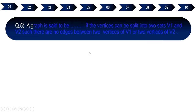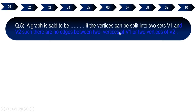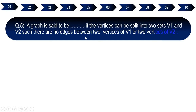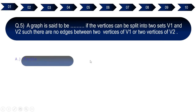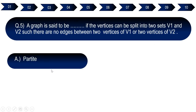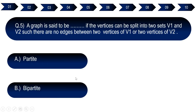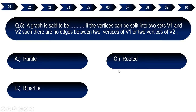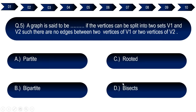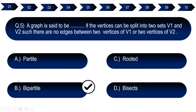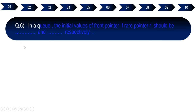Question number five: A graph is said to be dash if the vertices can be split into two sets V1 and V2 such that there are no edges between two vertices of V1 or two vertices of V2. Option A: parties. Option B: bipartite. Option C: rooted. Option D: bisects. The right answer is option B, bipartite.